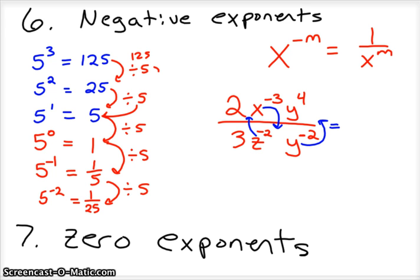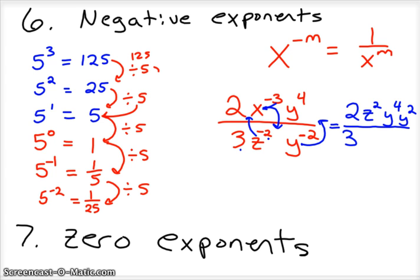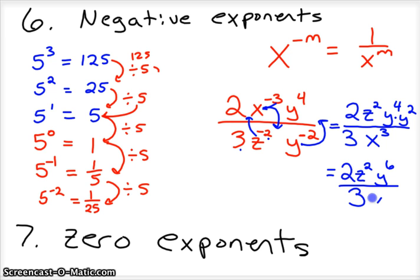Everything else stays exactly as it is. So we'd have 2 — it didn't move. z squared came up to the numerator as z to the positive second. y to the fourth stays. We also have y to the second coming up from the bottom. On the denominator we still have 3, and x to the third came down. Now everything is in positive exponents, so apply the product rule: y to the fourth times y to the second gives y to the sixth. Final answer: 2z squared y to the sixth over 3x to the third.